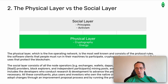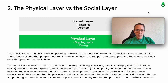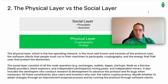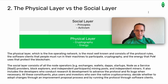The physical layer — which is the live operating network — is the most well-known and consists of the protocol rules, the software clients that people must run in their machines to participate, cryptography, and the energy that proof-of-work uses to protect the blockchain. The social layer consists of all the node operators — for example, exchanges, wallets, dApps, startups, node-as-a-service (NAS) providers, block explorers, independent participants, mining pools, and independent miners.